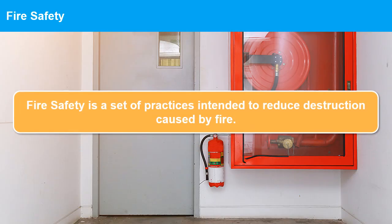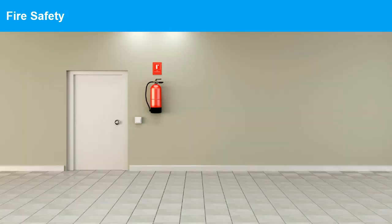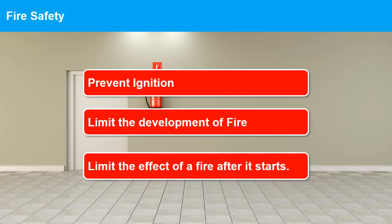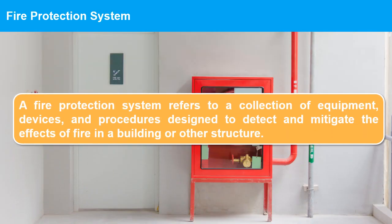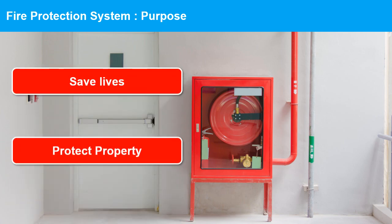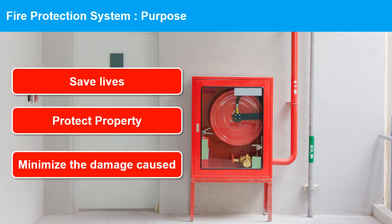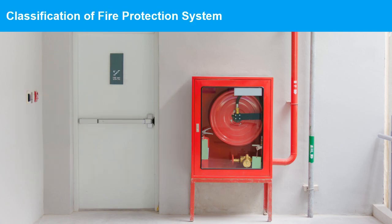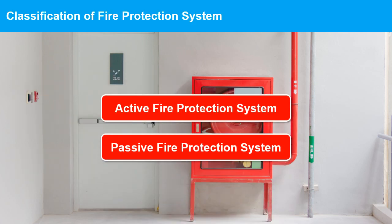What is fire safety? Fire safety is the set of practices intended to reduce the destruction caused by fire. Fire safety measures include: prevent ignition, limit the development of fire, and limit the effects of a fire after it starts. What is a fire protection system? A fire protection system refers to a collection of equipment, devices, and procedures designed to detect and mitigate the effects of fire in a building or other structure. The primary goal is to save lives, protect property, and minimize damage caused by a fire.